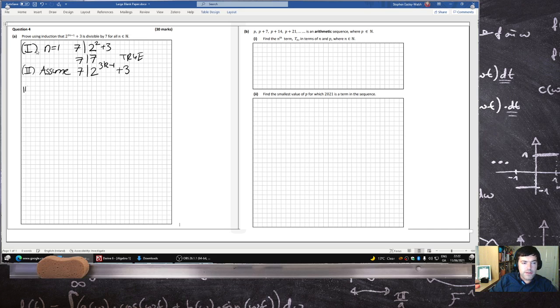And then step 3, we're required to prove that 7 divides into 2 power 3k plus 1 minus 1 plus 3. 7 divides into 2 power 3k plus 3 minus 1 plus 2 plus 3.